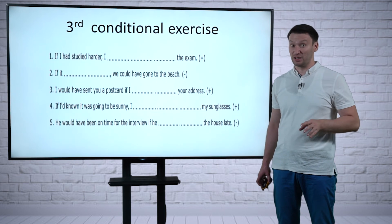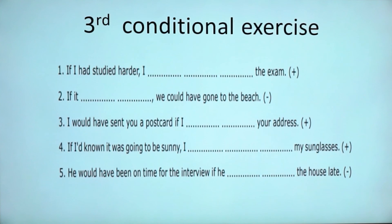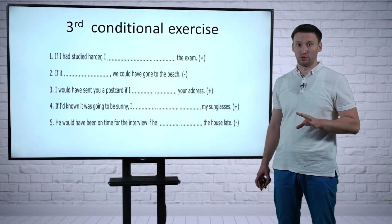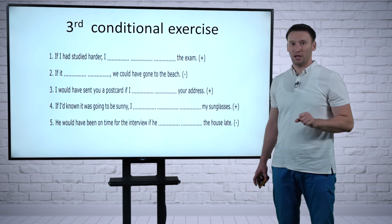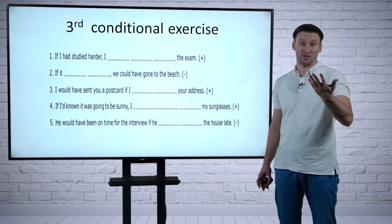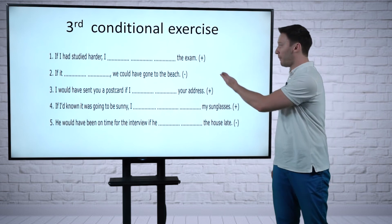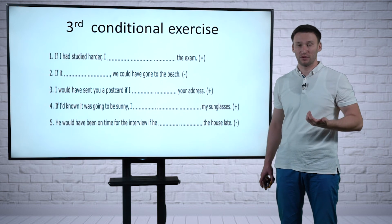And then we have, last but not least, the third conditional exercise for you to do. We have five different sentences that have been exemplified for you now. Pay attention to the symbol: if you have a plus here, you're asked to make them positive; if you have a minus, you're asked to make them negative.